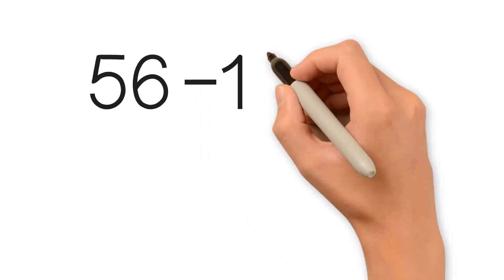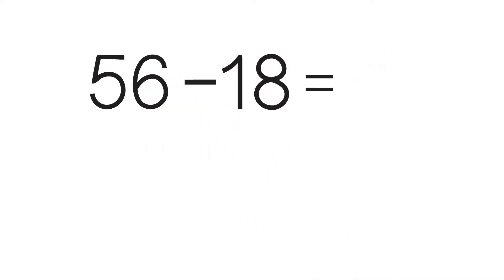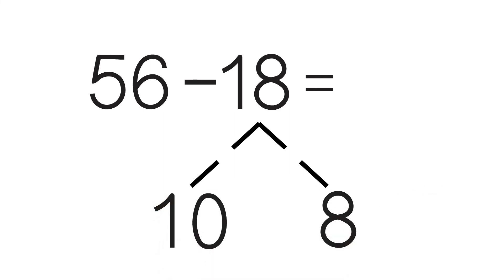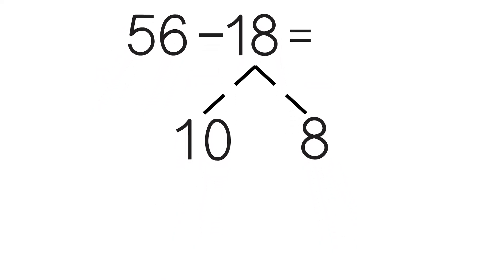Let's try another one. 56 minus 18 equals... First, we break apart 18 into 10 and 8. 8 is greater than 6, so we break it down further. We break down 8 into 6 and 2, because 6 minus 6 will be easy.